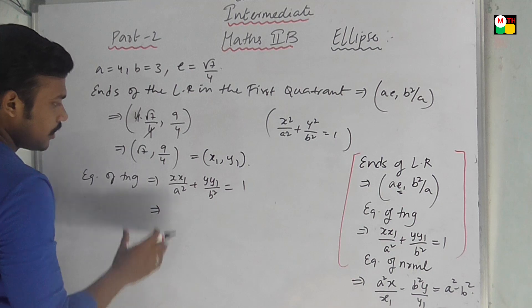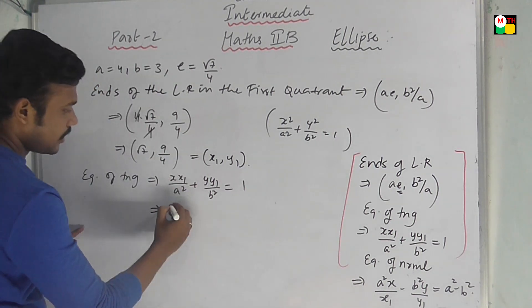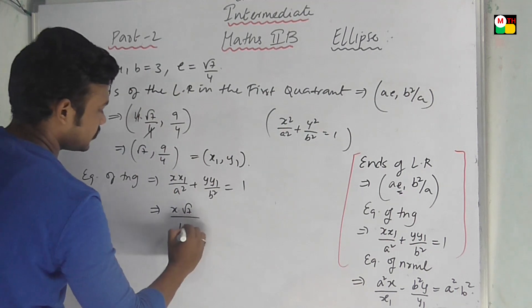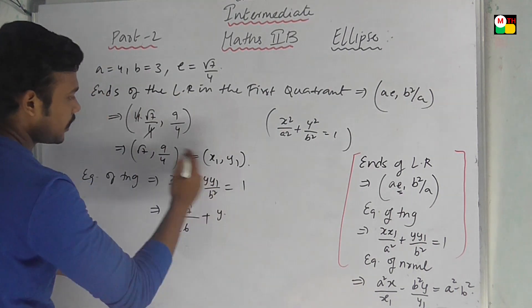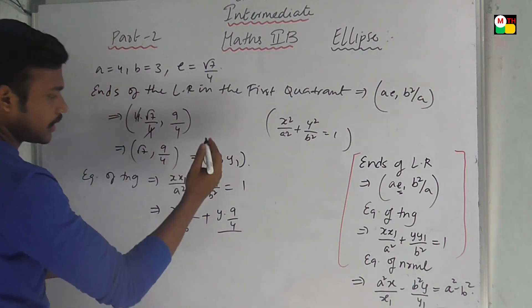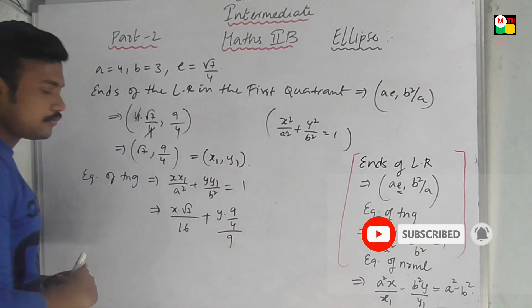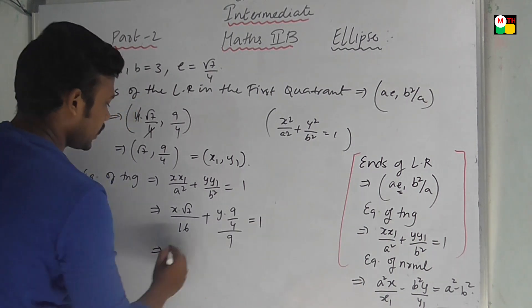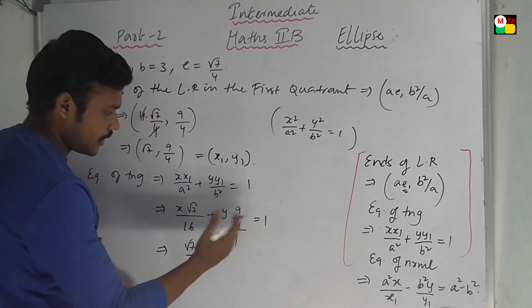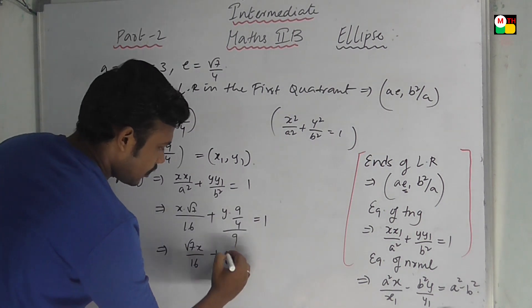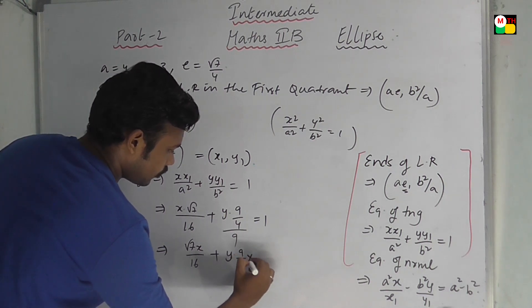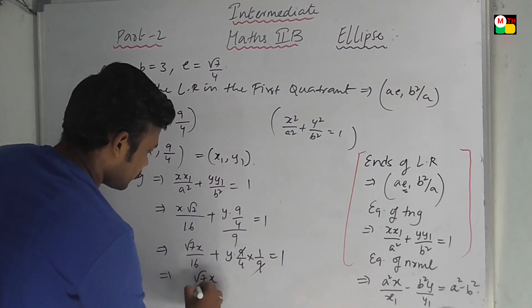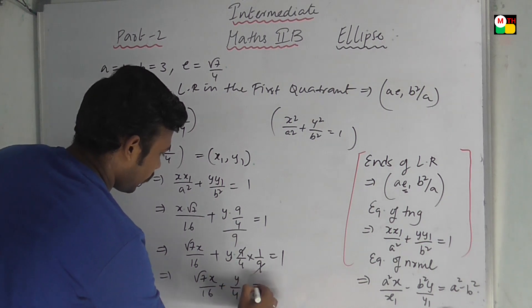Now I will do substitution. We will do x into x1 — root 7 by a square, which is 16. Plus y, I am going to do y1 which is 9 by 4. By b square, b is 3, so b square is 9. So: root 7 by 16 for the x-term, then y into 9 by 4 into 1 by 9 — the 9 and 9 cancel — giving y by 4. So the equation becomes root 7x by 16 plus y by 4 equal to 1.